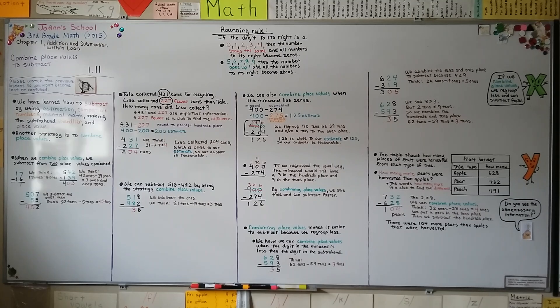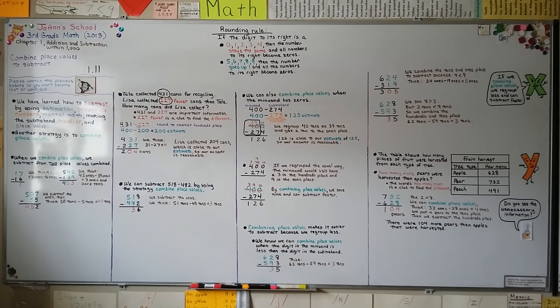So now you know how to combine place values to subtract faster and do less regrouping. Remember when you're trying to solve word problems to circle the important numbers and look for clue words like fewer or difference. And we know which place values to combine because we look for the numbers in the minuend that are less than the number in the subtrahend. And be careful of unnecessary information in word problems or in tables that you don't need. I hope you have a wonderful day. Today we're going to talk about problem solving and how we can draw a diagram to help us solve some problems in our next lesson. Bye.